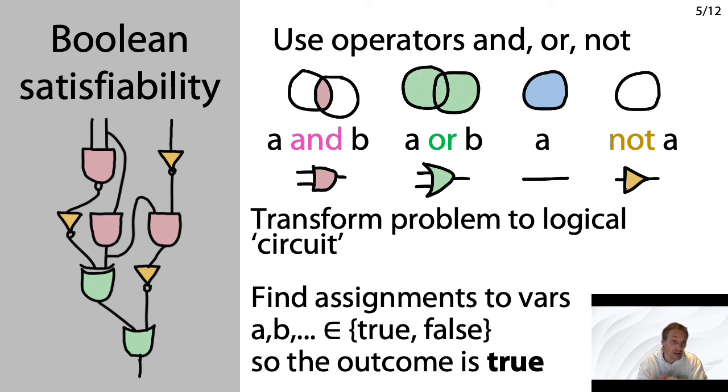And we have a very small number of operators. In the end, all of our inputs need to be true in order for the output to be true, or one or more need to be true. We can just pass the signal true as is, or we can negate it, in which case true turns into false or false turns into true.